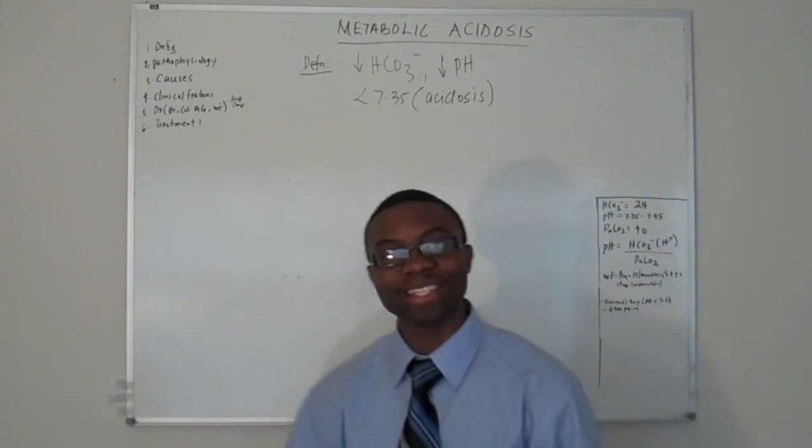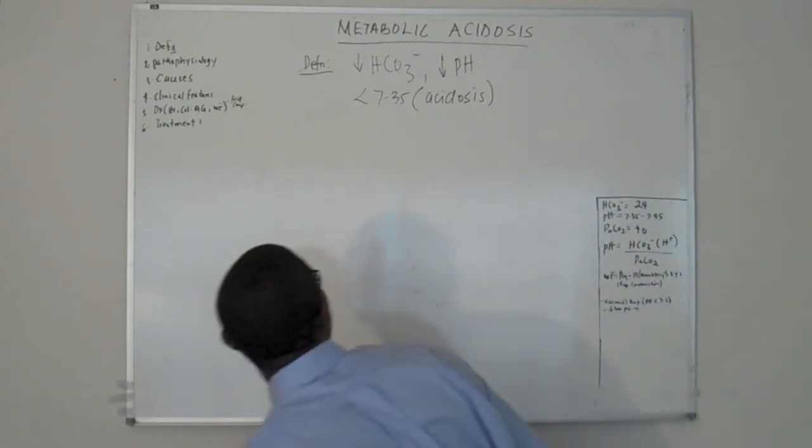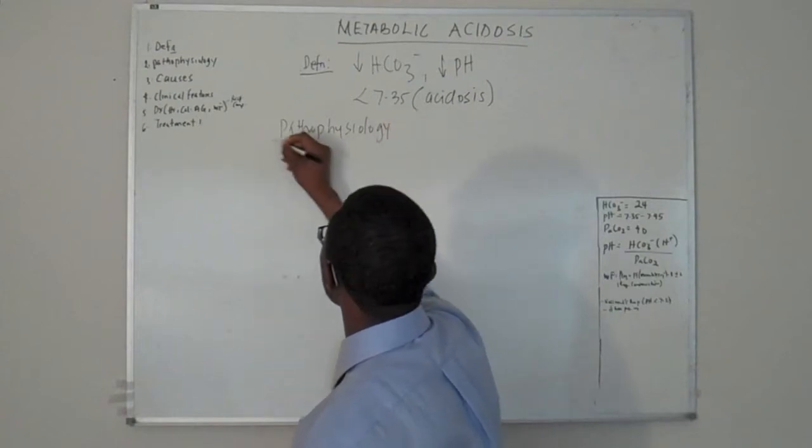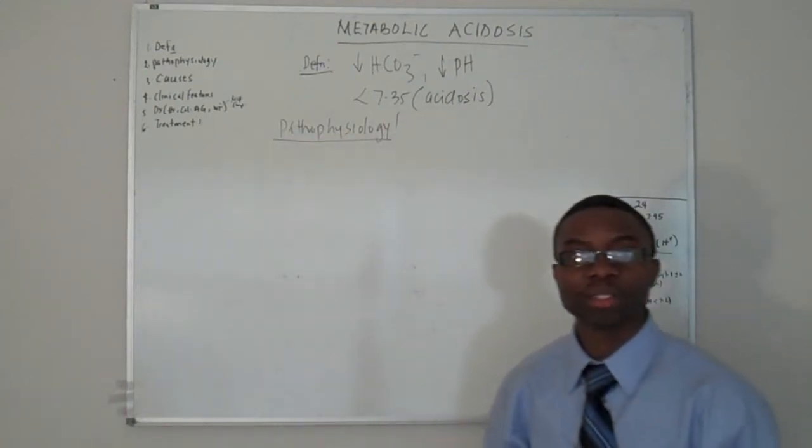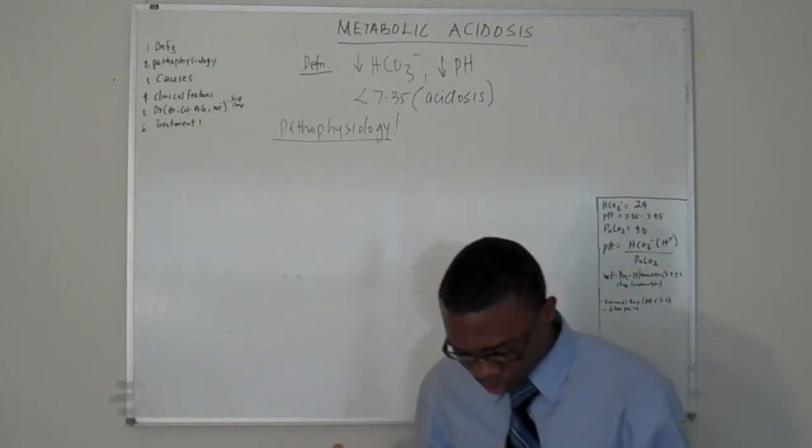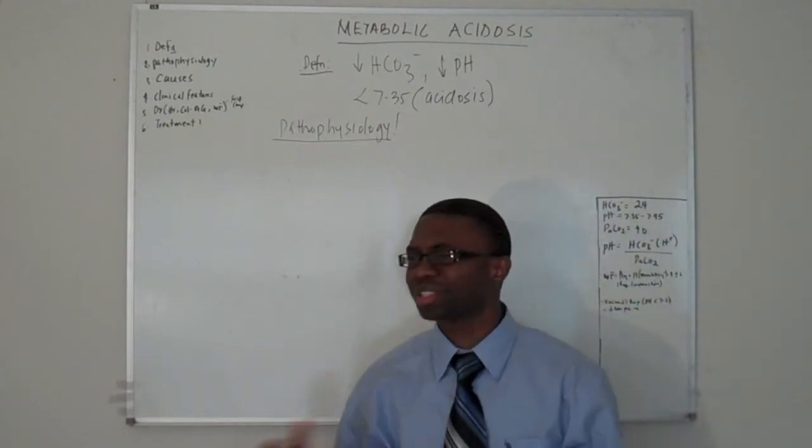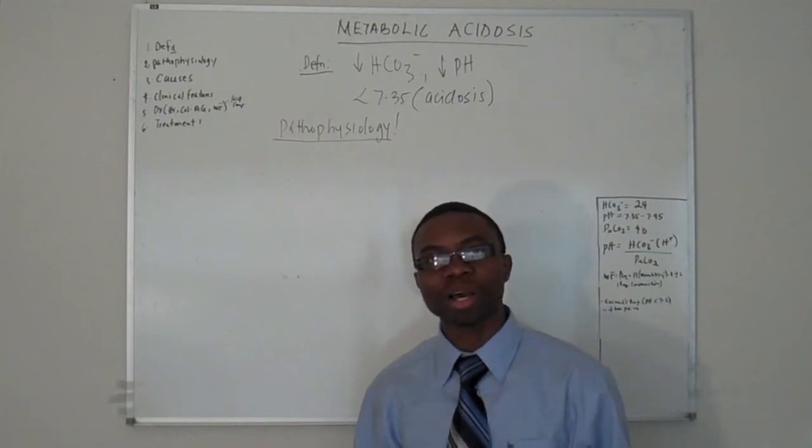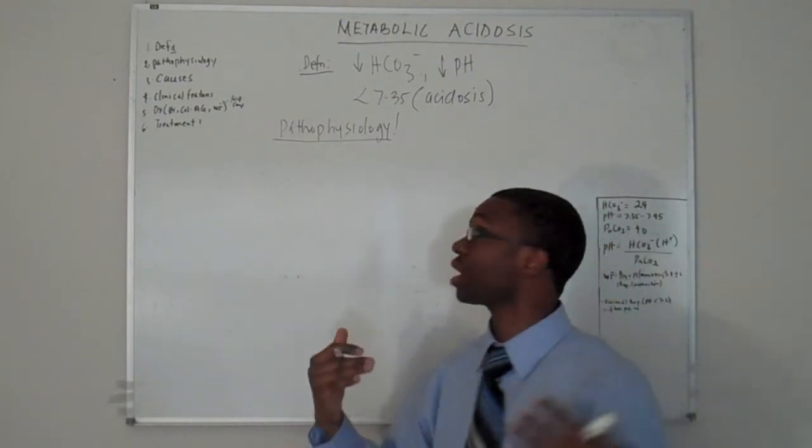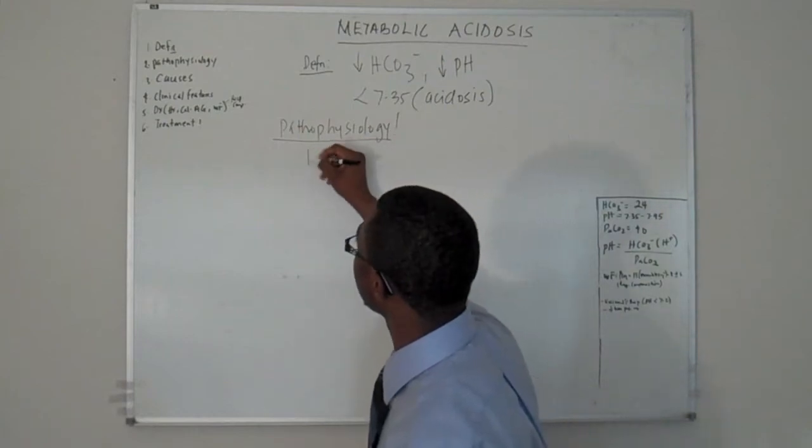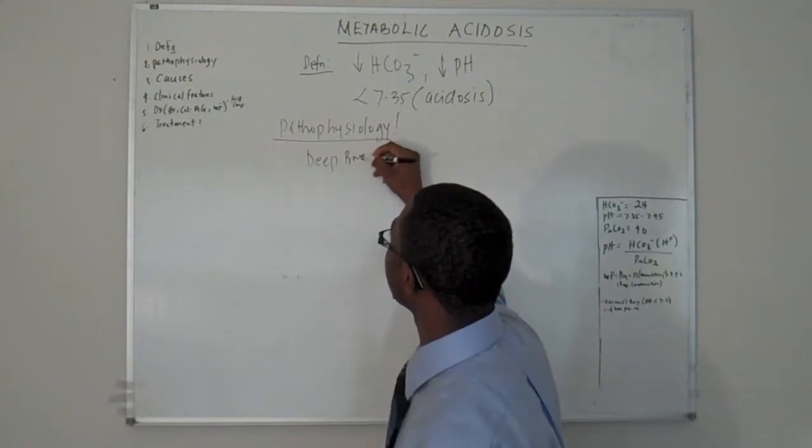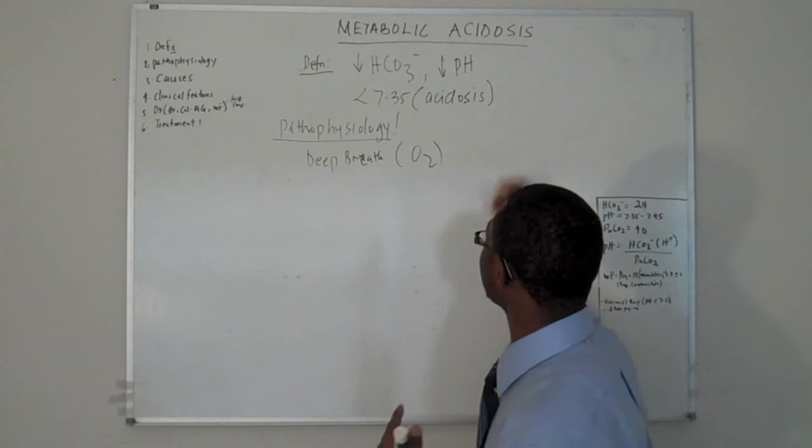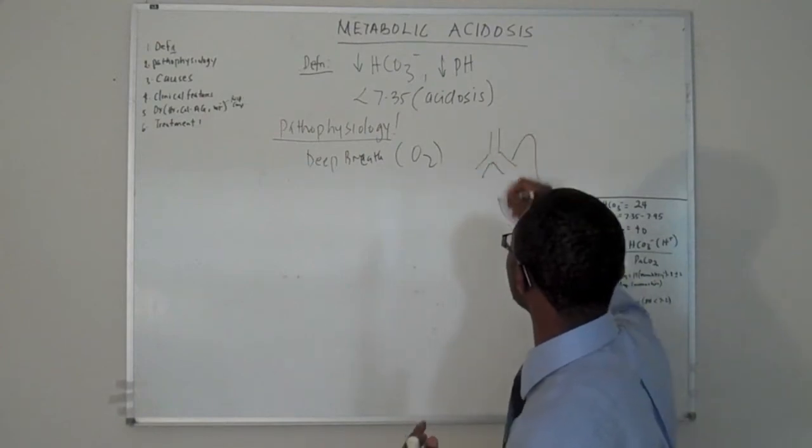Now, what is the pathophysiology? And this is where the bread and butter is really going to hit you. The pathophysiology of the disease starts with decreased perfusion. What does that mean? Decreased perfusion, ischemia. Why are we alive as human beings today? It's because God gave us the ability to take a deep breath. You take a deep breath, which is what? Oxygen.